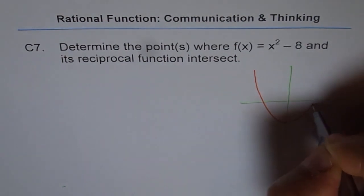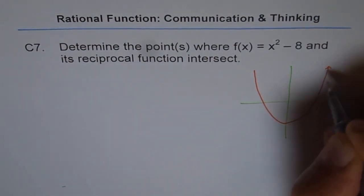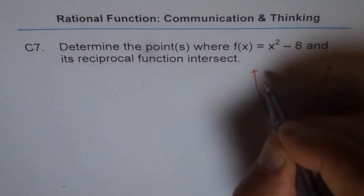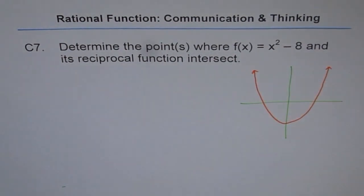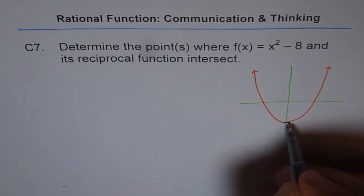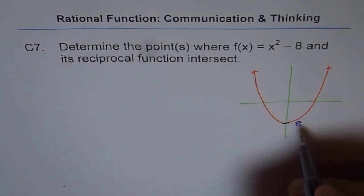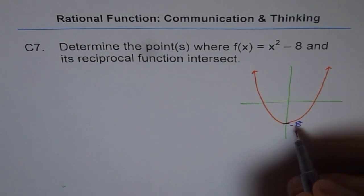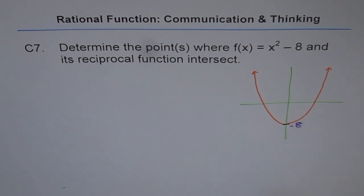So we have x squared minus 8 like this. When it is minus 8, this point which is the vertex is at minus 8. So the vertex is at minus 8.